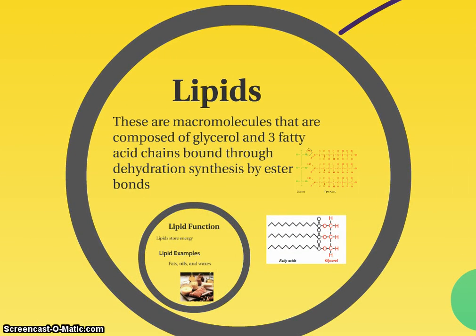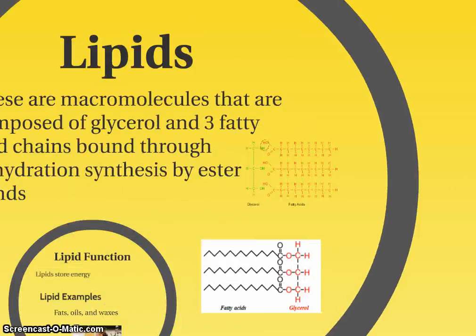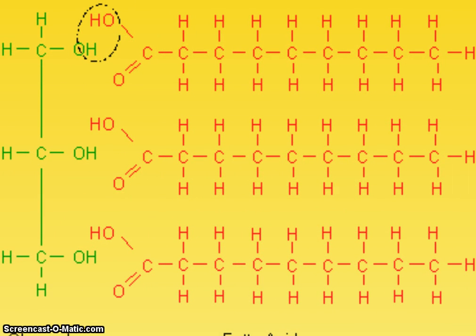Lipids are one of these macromolecules composed of glycerol and three fatty acid chains. They're bound together through three dehydration synthesis reactions, and each of those forms a special kind of covalent bond called an ester bond. On the left we have glycerol written in green ink, and on the right we have three fatty acid chains. Each fatty acid chain interacts with one part of that glycerol molecule and does its own dehydration synthesis reaction. Where circled, that OH is going to react with the hydrogen of the green glycerol, and water leaves the molecule to form a bond — we do this three times, making three water molecules.